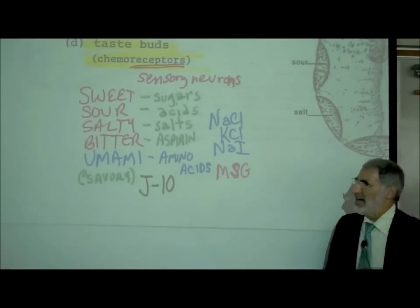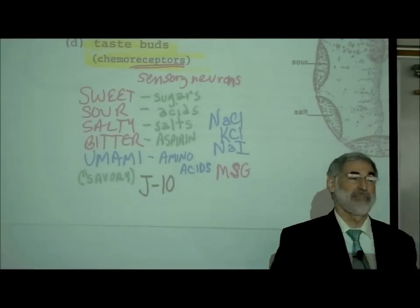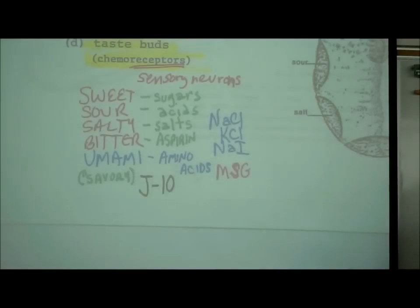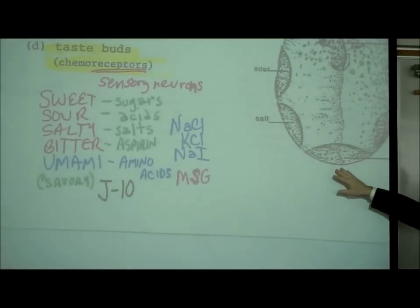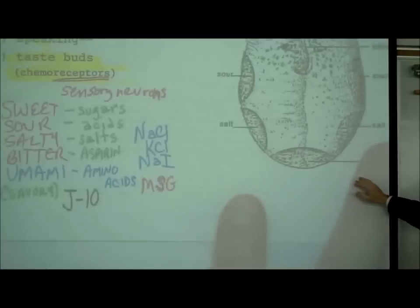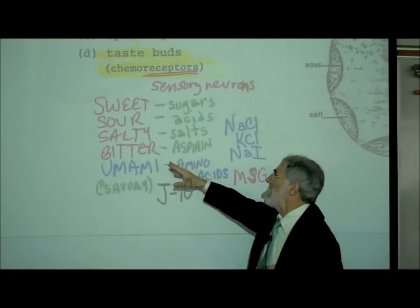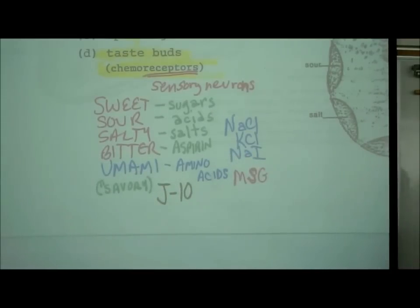The sweet chemoreceptors are activated by sugars. There are some chemicals that are not sugars that also activate these chemoreceptors on our tongue — those are called artificial sweeteners, because they're not really sugars but still stimulate these chemoreceptors, so we perceive it as sweet. There are also chemoreceptors activated by acids that create the sensation of sour.